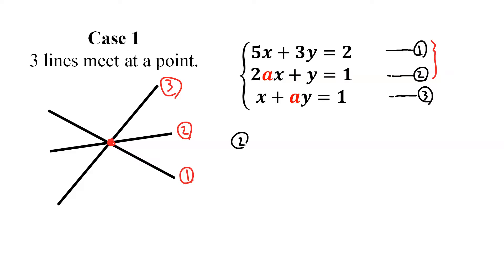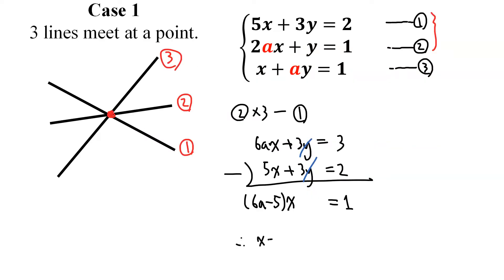We can eliminate Y by multiplying 3 at the second equation, subtracting one from that. So equation 2 times 3 means 6AX plus 3Y equals 3. And the first equation is simply this. So if we subtract it, we have 6A minus 5X and Y is eliminated equals 1. So therefore, we have X equals 1 over 6A minus 5.